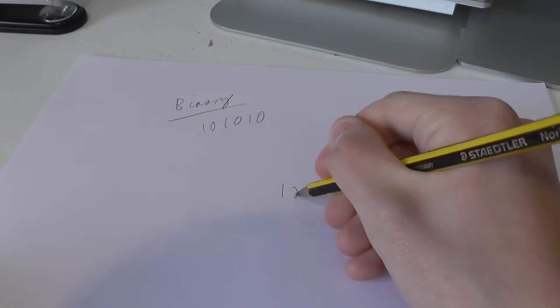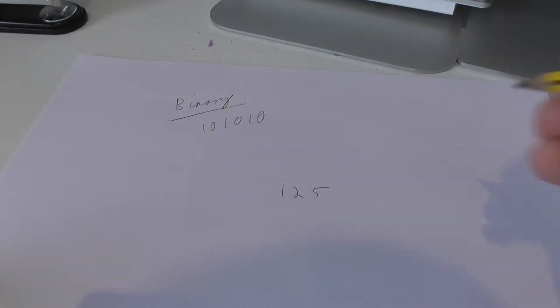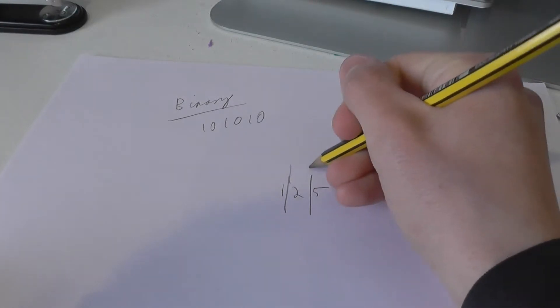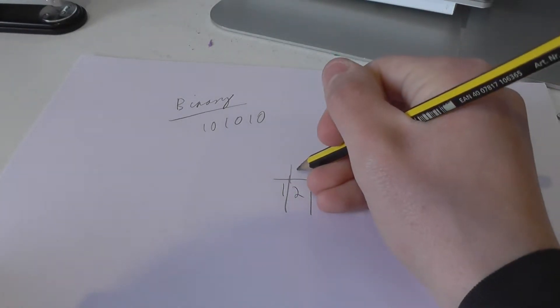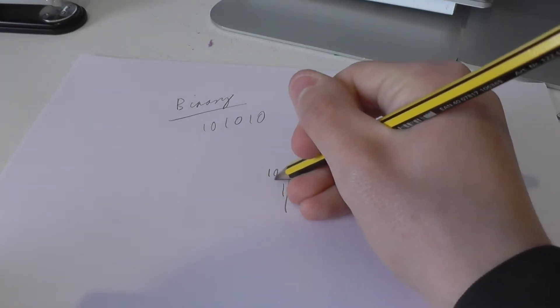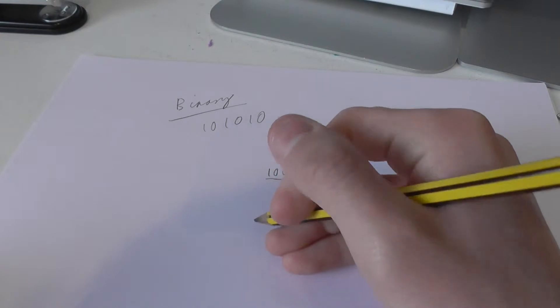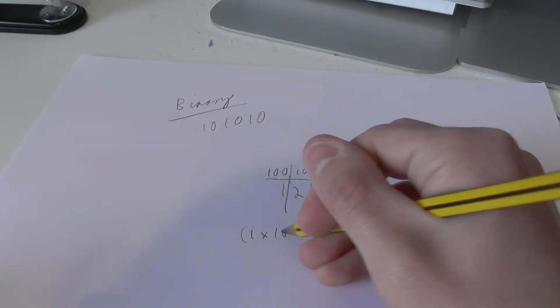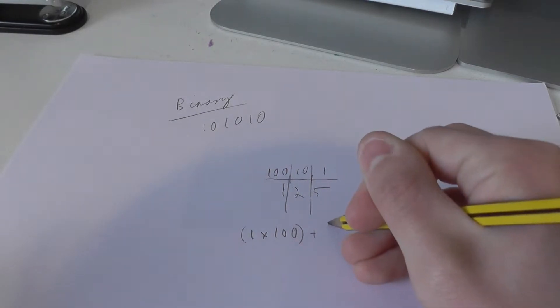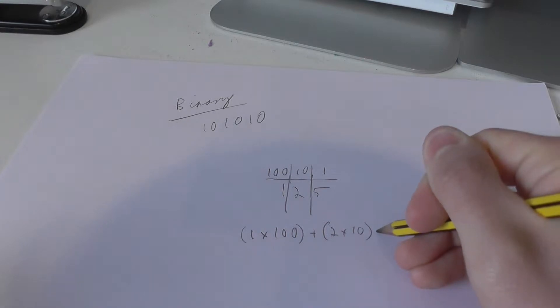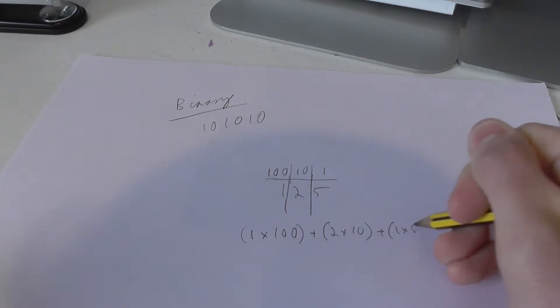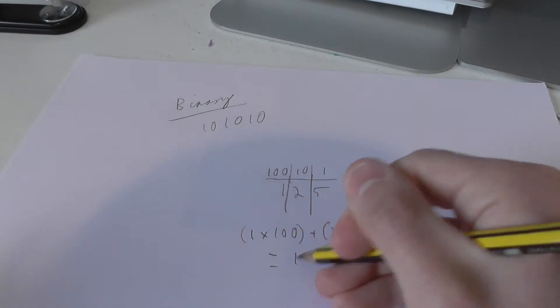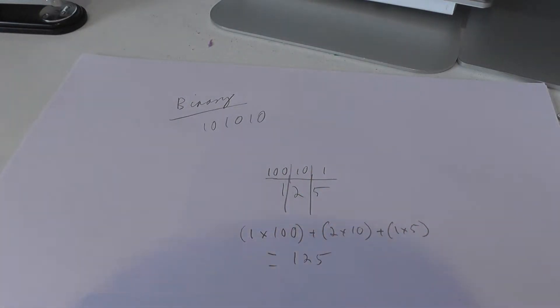First, we've got to understand how we usually count. If I show you the number 125, what does that mean? We can split that number up. We have got that is 1, that is 10, and that is 100. That means 1 times 100, add 2 times 10, add 5 times 1, and that obviously equals 125. That is how we count using what we call base 10, and base 10 is how we normally count.